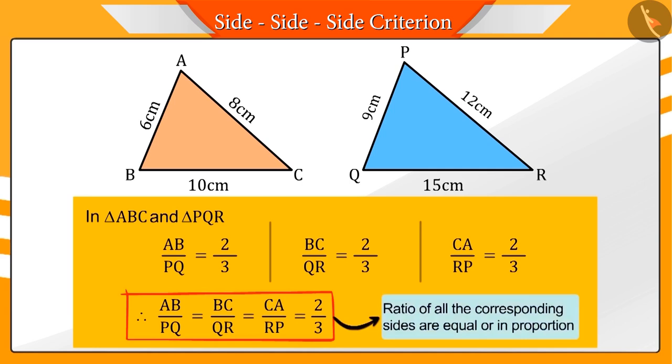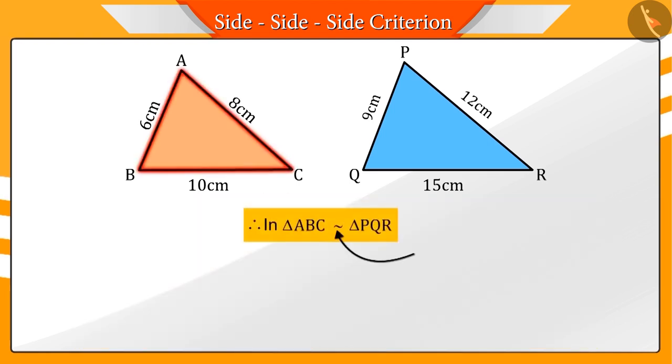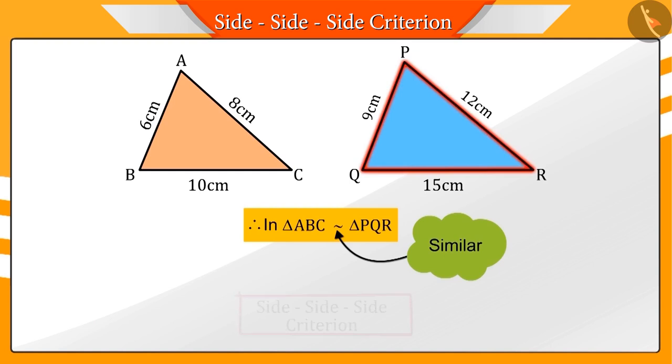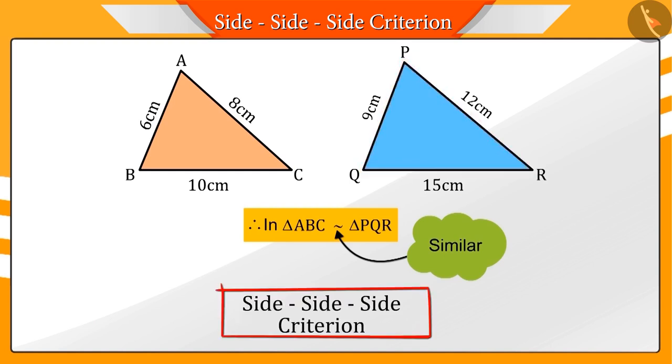Here, we saw that the ratio of the corresponding sides are equal. Hence, we can say that the triangles ABC and PQR are similar by the SSS criteria.